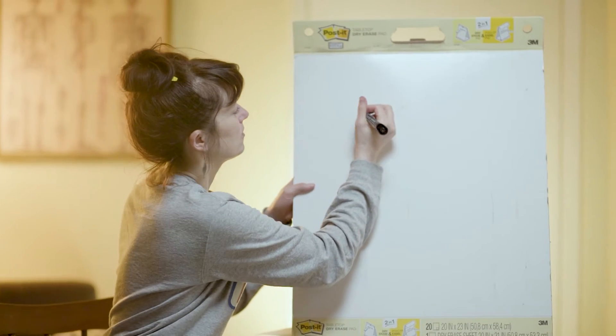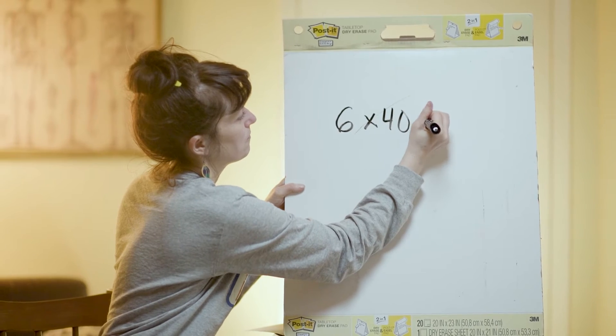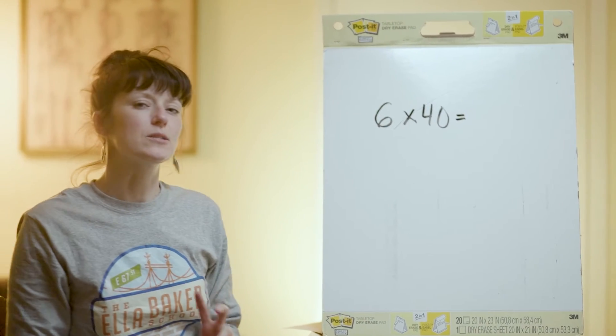So I'm going to give you a problem here. Say we have 6 times 40. How would you go about solving this problem?